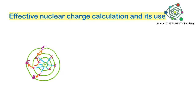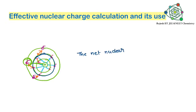Here you need to understand one point: inner electrons show a shielding effect. That means these inner electrons stop the nuclear attraction on outermost shell electrons. However, a certain attraction force is still experienced by the outermost electrons. That nuclear attraction experienced by outermost electrons is called effective nuclear charge. Even though there is some shielding effect of inner electrons, valency electrons still have some attraction with the nucleus.